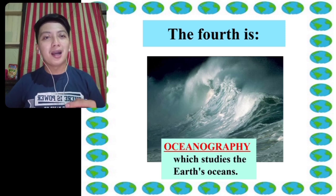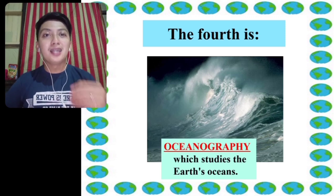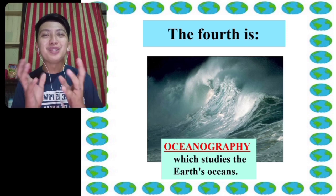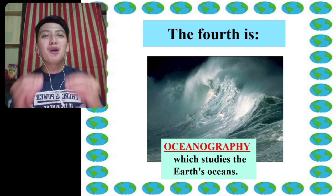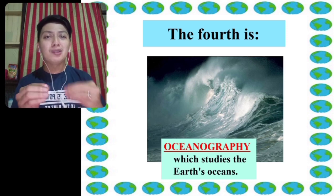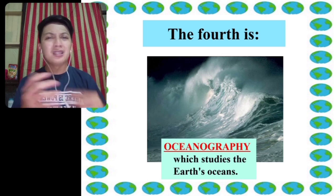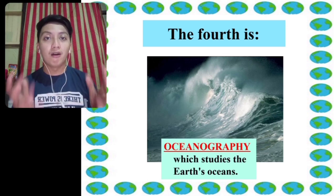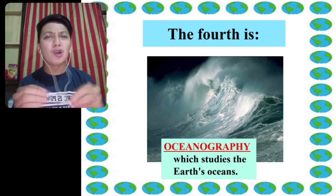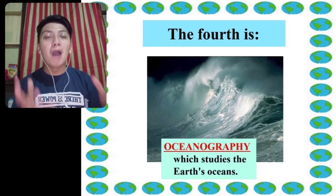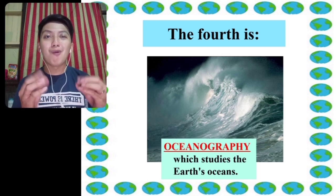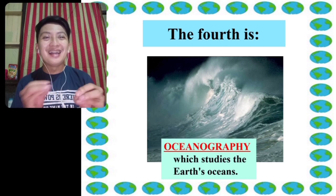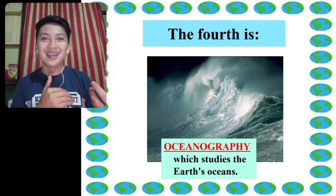The fourth branch is Oceanography — the study of the earth's oceans. It covers the physical, chemical, and biological aspects of the ocean — everything about the blue part of our planet, which makes up about 75 percent of the earth's surface.